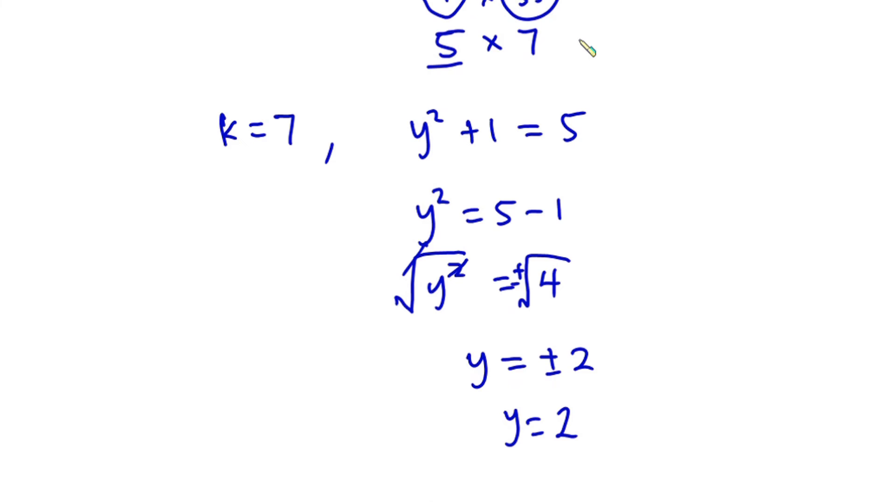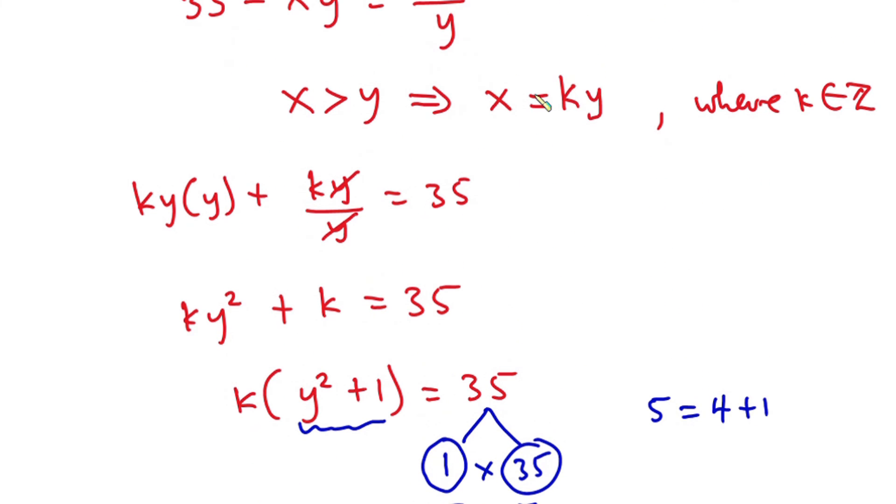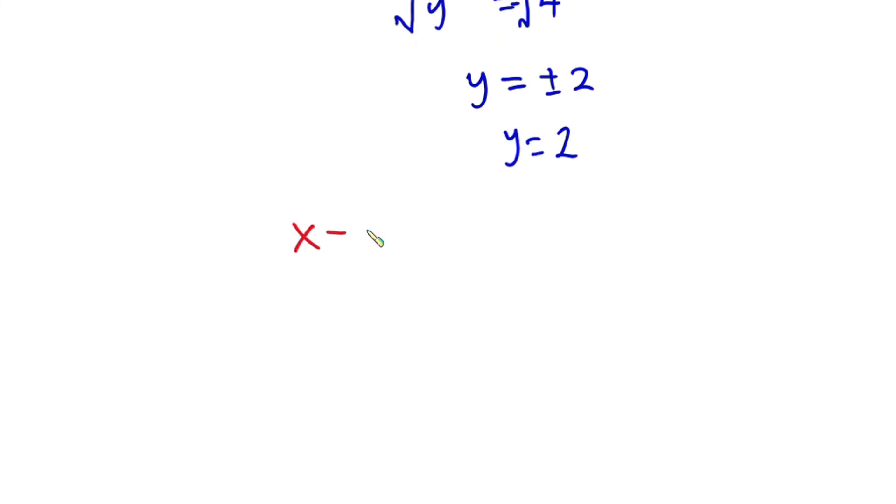Awesome! Now let's go ahead and plug the value of k and y into this equation. We have x equals k times y, but we know that k equals 7 and y equals 2. So this implies that x equals 14.